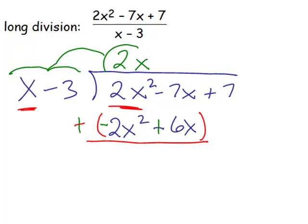And as we combine what we want to have happen and will happen, the 2x squared and the negative 2x squared become zero. Negative 7x here and positive 6x is a negative 1x or just negative x. And we bring down the plus 7.